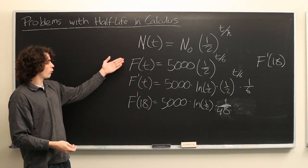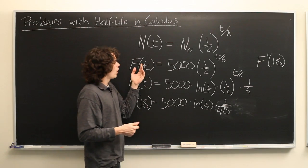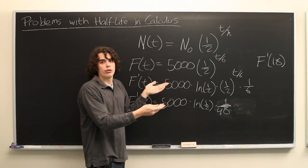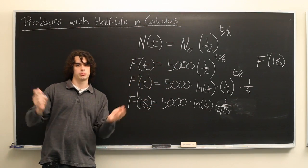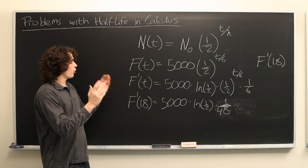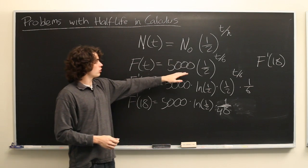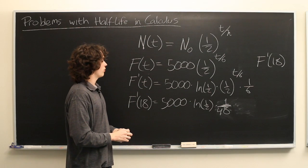Or you might be asked something more abstract. Simply be given a formula like this with the half-life and be asked, what is the area under this curve from t equals 12 to t equals 1,000? There are all sorts of different problems that might come up. But essentially, it's no different than any other exponential function.